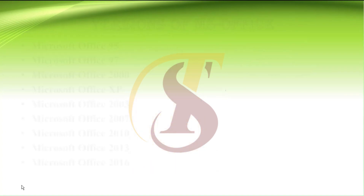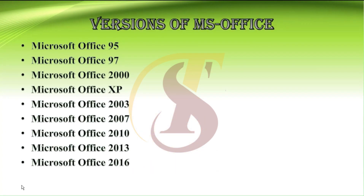If we talk about Microsoft Office variants, we have Microsoft 95, 97, 2000, XP, 2003, 2007, 2010, 2013, and 2016 available.